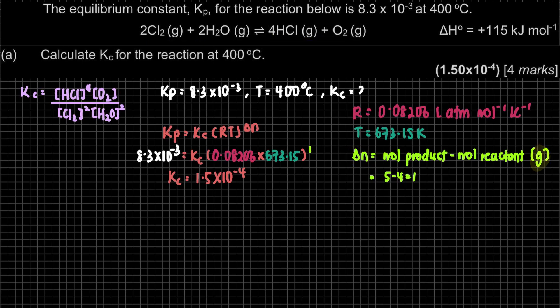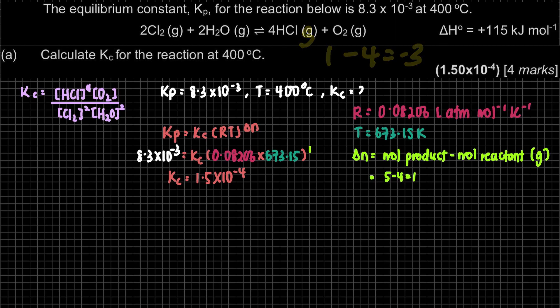For example, if HCl were in the solid phase, we would not count it in ΔN. In that case, moles of gas product would be 1 (just O₂) minus 4 (Cl₂ + H₂O), giving ΔN = −3. That is what is meant by ΔN being only for the gas phase.